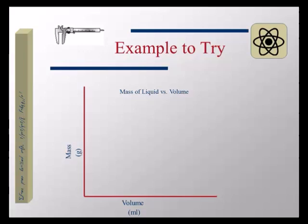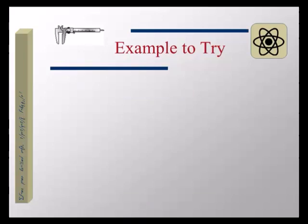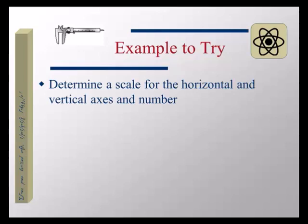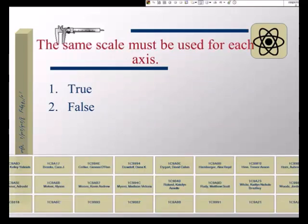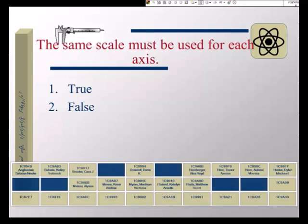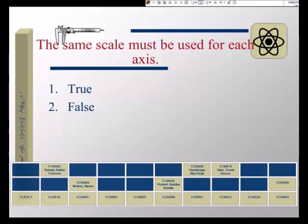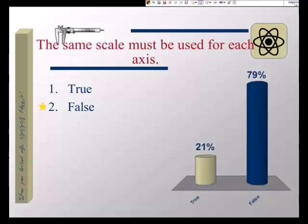What do we have to do before we plot points? We need to figure out what scale we're going to use. We have to figure out a scale for both axes and number them off. We want the data to be spread over as much of the paper as we possibly can. Do we have to use the same scale on the x-axis that we use on the y-axis? No — you don't have to use the same scale for each axis. In fact, it can be very unusual that you'd have the same scale for each axis. Each axis you take independently based upon the numbers you're given.